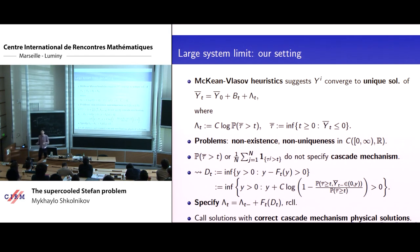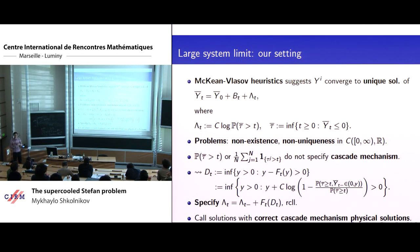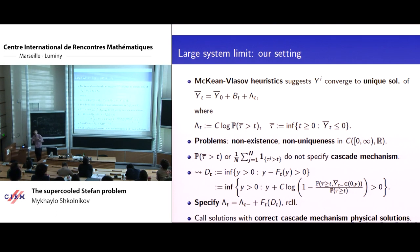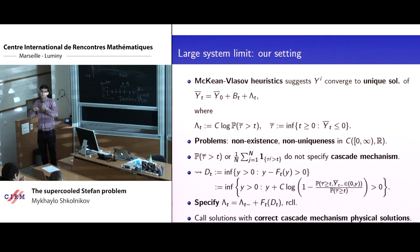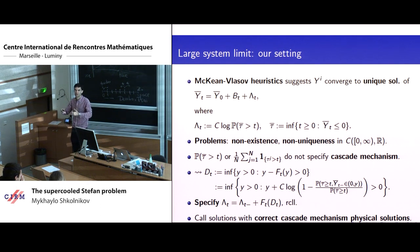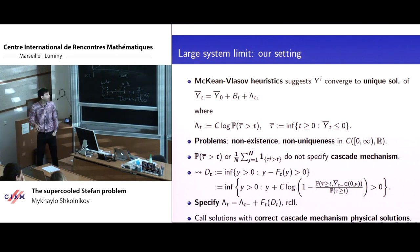Typically in these kinds of problems, from PDE results or analytic techniques you get existence and uniqueness for the limiting problem. If you can establish some tightness estimate for your particle system, you can deduce that along subsequences you have to converge. If the limit points solve the limiting problem, you get convergence of the whole sequence to the unique solution of the limiting problem.